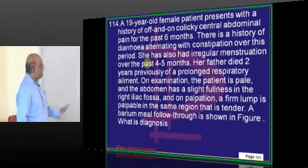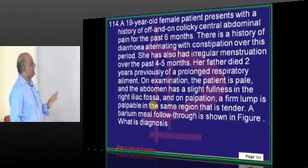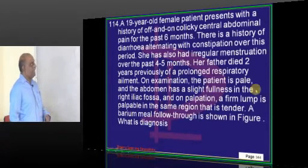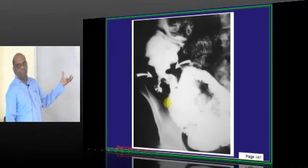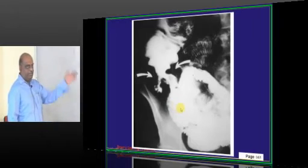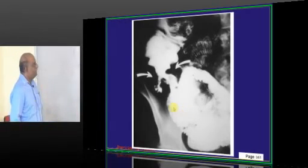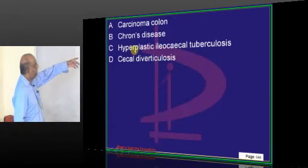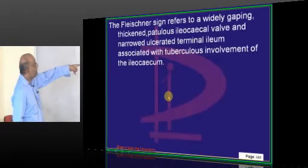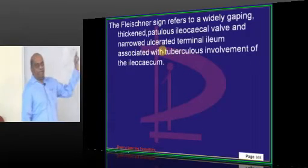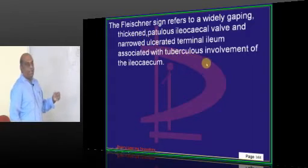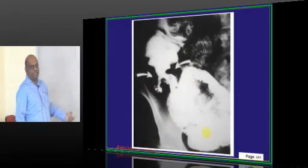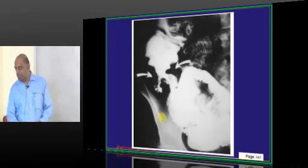A 19-year-old with colicky abdominal pain, history of diarrhea alternating with constipation. On examination the patient is pale, abdomen has slight fullness in the right iliac fossa with a lump in the same area. Barium follow-through is shown — this is hyperplastic ileocecal TB. The sign seen on the barium image is the Fleischner sign: widely gaped thickened patulous ileocecal valve and a narrowed ulcerated terminal ileum due to ileocecal involvement.